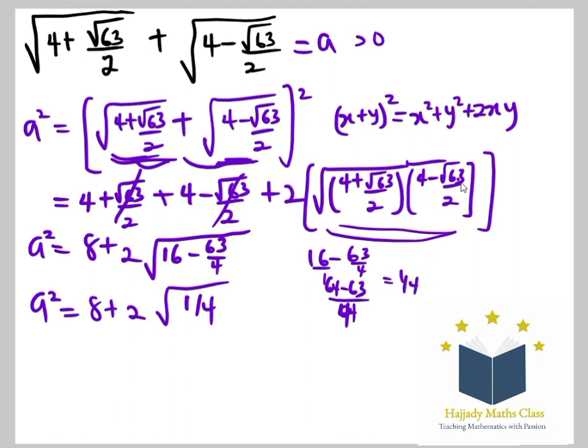So I have my A squared to be equal to 8 plus 2 multiplied by root 1 over 4, which is 1 over 2. So canceling, A squared will be 8 plus 1, which is the same thing as 9. So my square root is going to be 3. Don't forget that my A is assumed to be greater than 0. So that shows that this answer is correct.